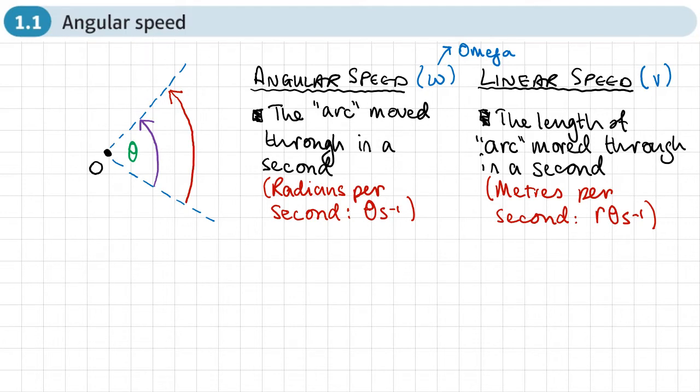So if we start with velocity, v for velocity, we know we can get velocity by differentiating the displacement with respect to time. Now the displacement, if we're looking at this arc length here, that's r theta, so I can replace x with r theta.